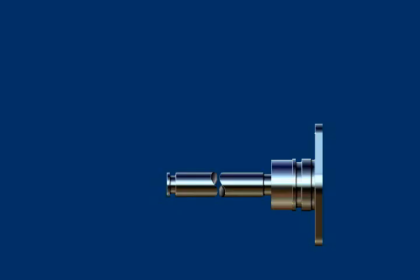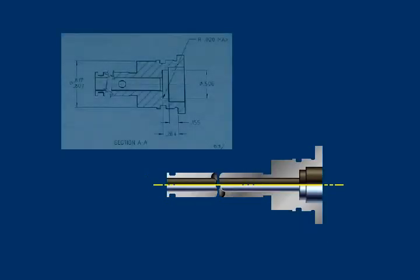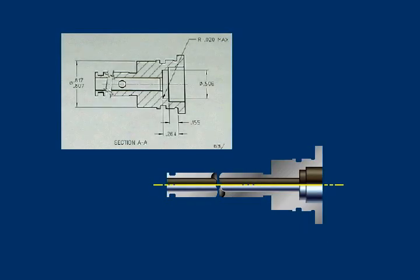If the part were cut all the way through along cutting plane line A and the piece that the arrows point to turned in order to see the cutaway area, we will see the features represented by section view A on the print.